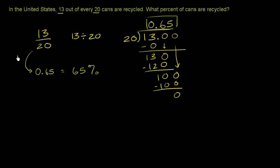Now there's another way you could have done it. You could have said, look, percent literally means per 100. So 13 out of 20 is going to be equal to what over 100? Well, to go from 20 to 100, for the denominator, you would multiply by 5.